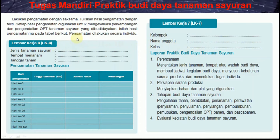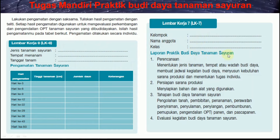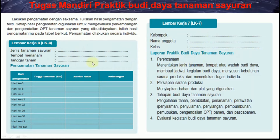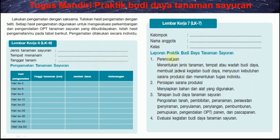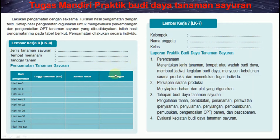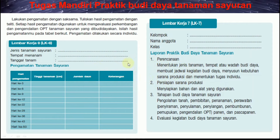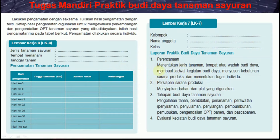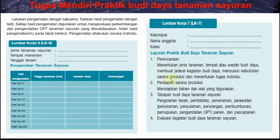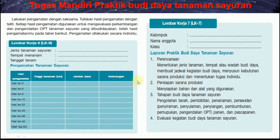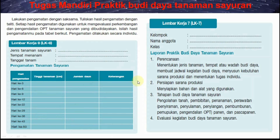LK5, LK6, serta LK7 untuk laporan praktik budidaya tanaman sayuran. Ini butuh waktu, maka segera lakukan budidaya tanaman sayuran, minimal 3 jenis tanaman sayuran di pekarangan dengan menggunakan polybag. Tugasnya bisa dikumpulkan di akhir semester sampai kegiatan panen dan pasca panen.